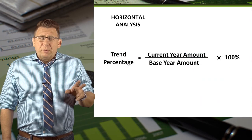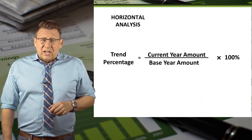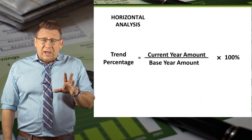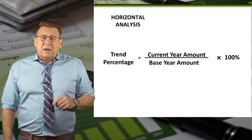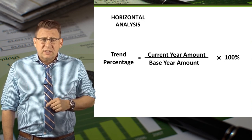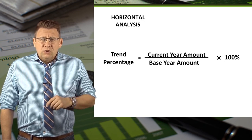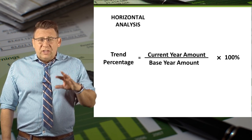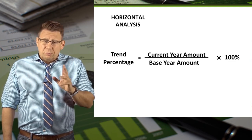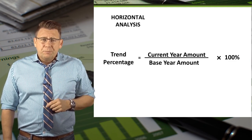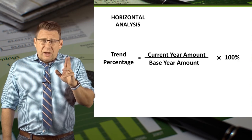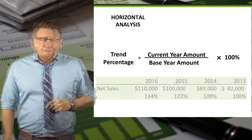The formula for trend analysis is to take the current year amount and divide it by the base year amount times 100%. You can also do new minus old divided by old plus 1. The old amount is always the base year.